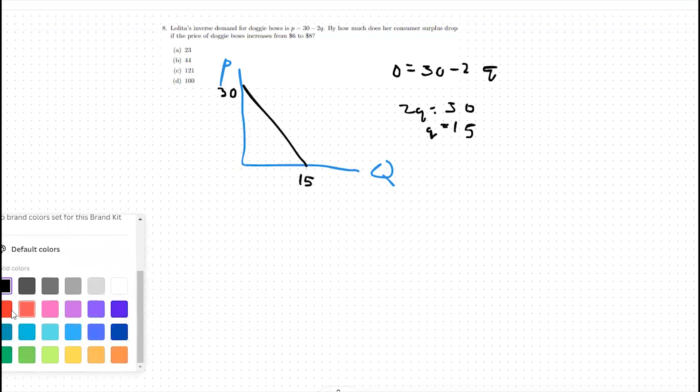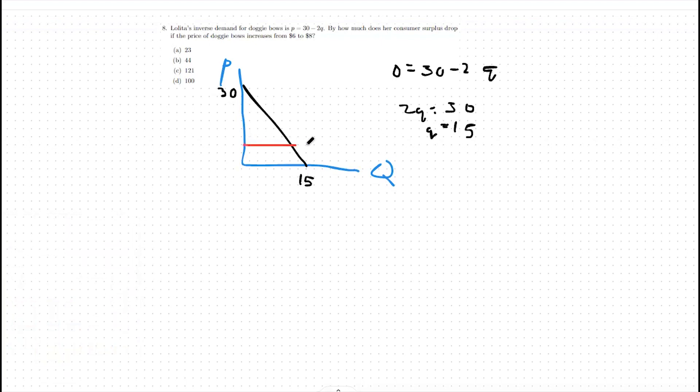So at a price of $6, we can start out. We'll say 6 right here is our price. This would be our consumer surplus, this triangle right here, which is the difference between our willingness to pay curve or demand curve and above the price level.